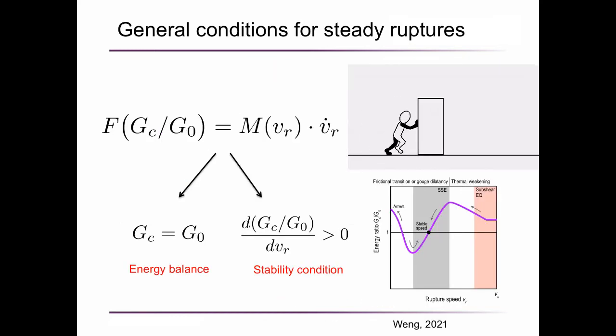These ruptures are non-steady state. This cartoon is an analogy to this equation of motion. Suppose you are pushing a box, and the net force acted on this box is positive, then it accelerates. If the force is negative, it decelerates. Now how can we get a constant speed? One condition is that the net force is zero, so the acceleration is zero. It results in the energy balance condition for a steady state.